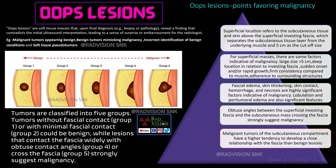OOPS lesions are soft tissue masses that reveal a finding contradicting the initial ultrasound interpretation, causing surprise for the radiologist — examples include malignant tumors appearing benign, benign tumors appearing malignant, and soft tissue pseudotumors. Points favoring malignancy: size greater than 5 cm, deep location relative to investing fascia, sudden onset or rapid growth, firm consistency, adherence to surrounding structures, fascial edema, skin thickening, and hemorrhage. If the angle between mass and fascia is obtuse with infiltration, suspect malignancy. Groups 1-2 are benign, group 3 is borderline, and groups 4-5 (obtuse fascial contact / complete infiltration) are malignant.